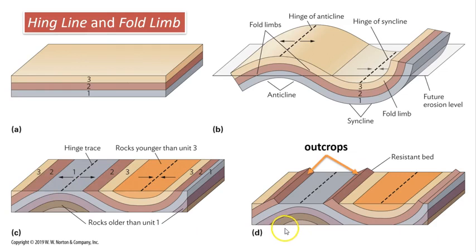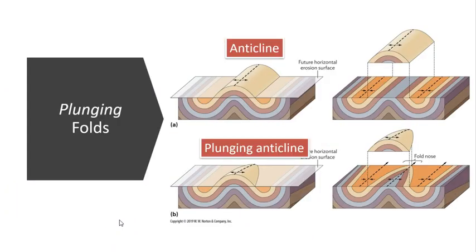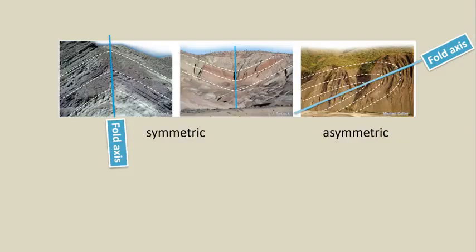Strata more resistant to erosion may stand out topographically as outcrops of rock. When the fold axis has been tilted by tectonic stresses, the fold is called a plunging anticline or plunging syncline. This controls the orientation of strata where it intersects Earth's surface and the pattern strata will make on the surface. If the fold axis is tilted from vertical, the fold can also be described as an asymmetric fold.